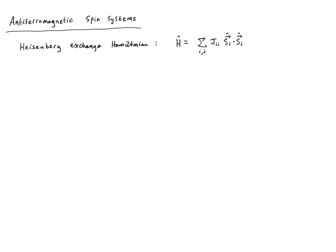We start with the paradigmatic model for describing spin systems: the Heisenberg exchange Hamiltonian. We have a sum over lattice sites i and j, with a spin-spin interaction S_i · S_j, and a particular exchange coupling strength J_ij, which encodes the dimensionality, connectivity, and geometry of the lattice. These are quantum mechanical spin operators for spin s. In this lecture we focus on anti-ferromagnetic systems, so the exchange couplings J are greater than zero, which favours the anti-parallel alignment of neighbouring spins.